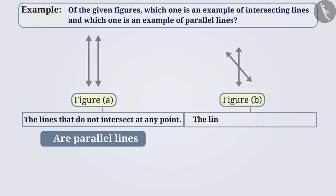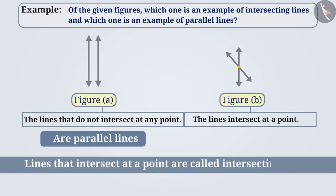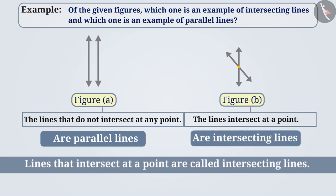The lines of figure B intersect at a point. Lines that intersect at a point are called intersecting lines. Hence, figure B is an example of intersecting lines.